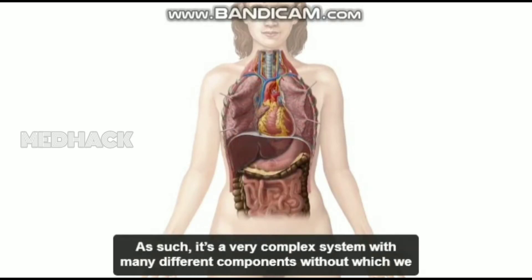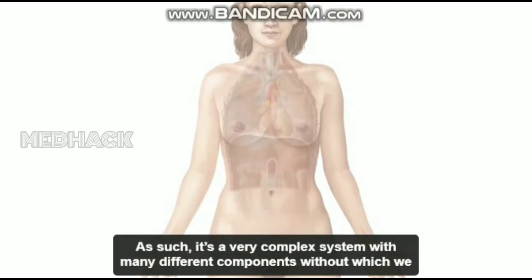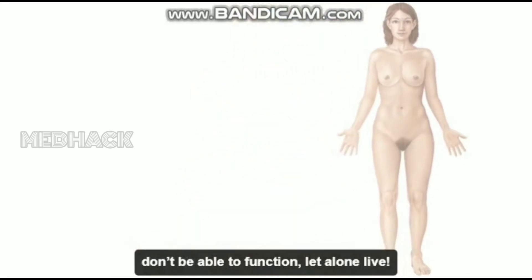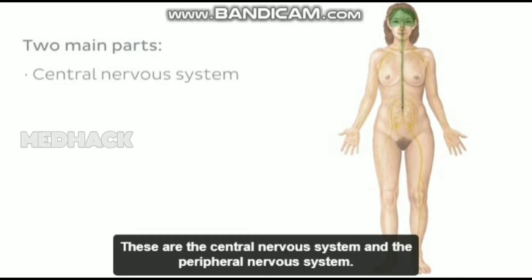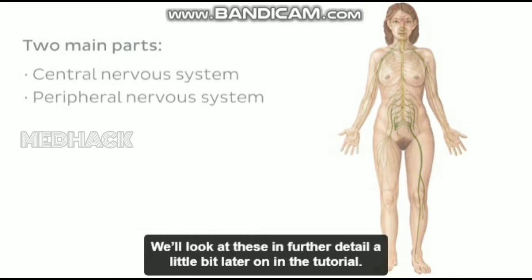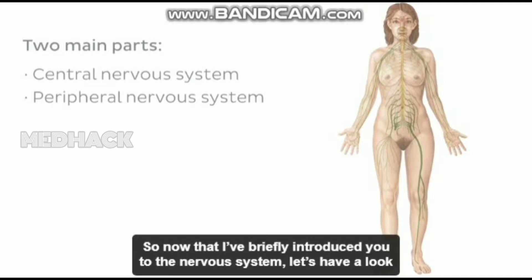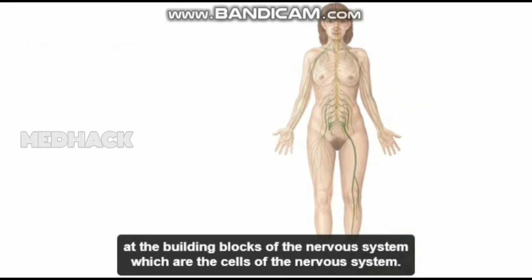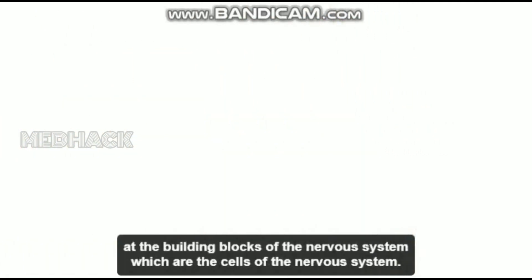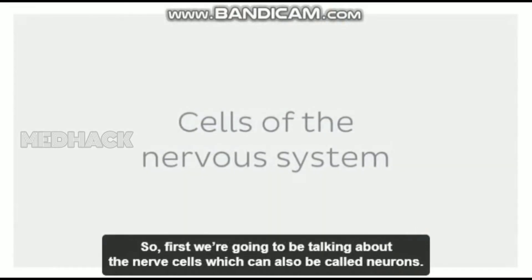As such, it's a very complex system with many different components, without which we'd not be able to function, let alone live. There are two main parts of the nervous system: the central nervous system and the peripheral nervous system. We'll look at these in further detail a little bit later on in the tutorial. So now that I've briefly introduced you to the nervous system, let's have a look at the building blocks of the nervous system, which are the cells of the nervous system.